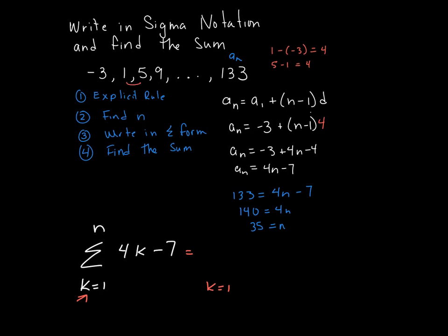The formula for that is just n over 2 times a1 plus an, which in this case is 35 over 2 times negative 3 plus 133, which gives us 2,270.